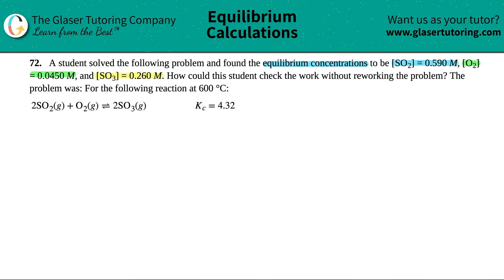How could the student check the work without reworking the problem? The problem was for the following reaction at 600 degrees Celsius. We have this equation with the Kc value. So all we have to do is basically they got an answer for their equilibrium concentrations and they just want to check their work.